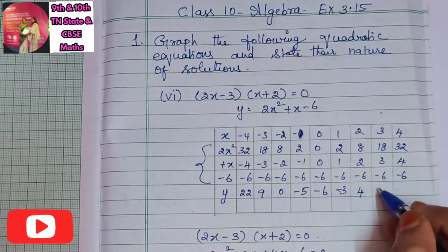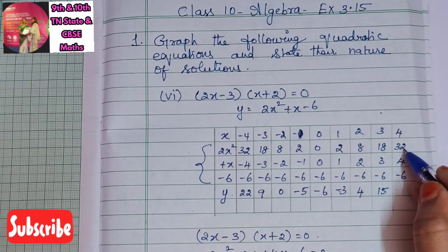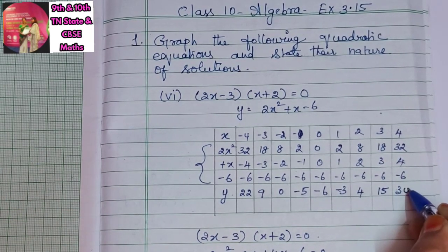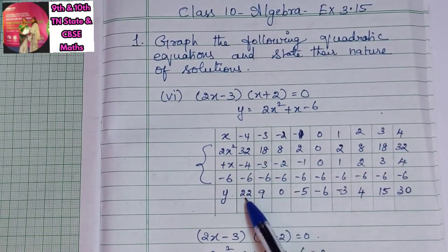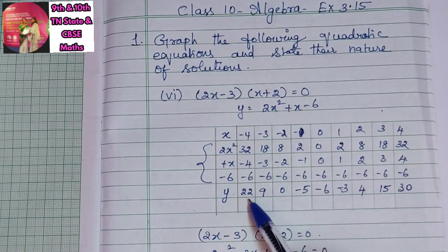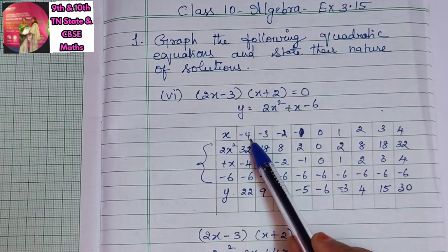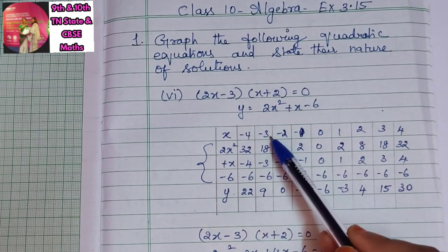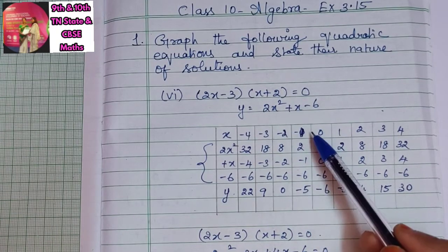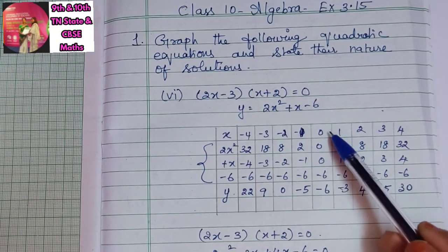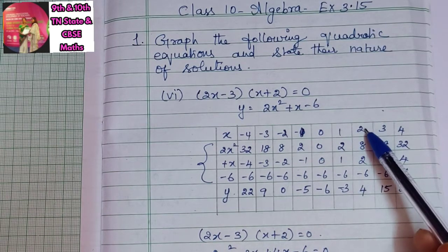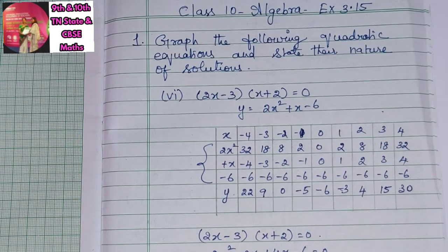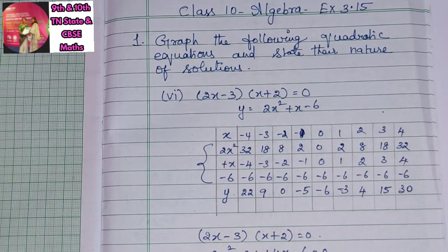For x = -4: 32 + (-4) - 6 = 22. For x = -3: 18 + (-3) - 6 = 9. For x = -2: 8 + (-2) - 6 = 0. For x = -1: 2 + (-1) - 6 = -5. For x = 0: -6. For x = 1: -3. For x = 2: 4. For x = 3: 15. For x = 4: 32 + 4 - 6 = 30.